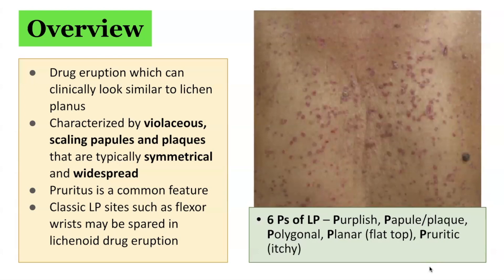The six Ps stand for purplish, papule, plaque, polygonal, planar — which means flat top — and pruritic, which means itchy.